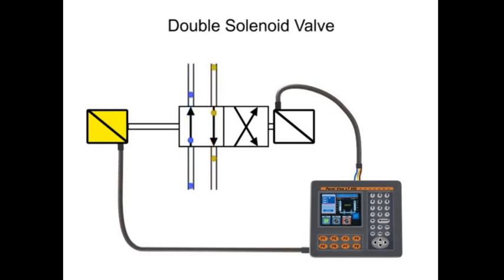Even if the first solenoid is de-energized, the spool remains shifted. This is because there is no spring to return the spool to its original position.